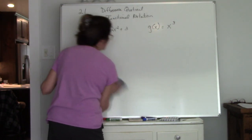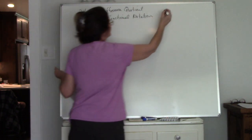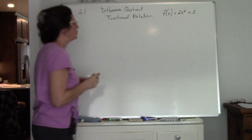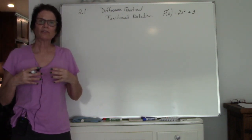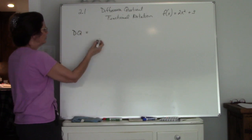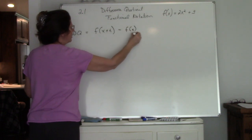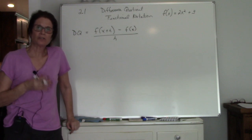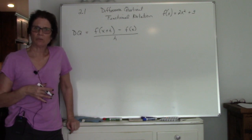Now we're going to jump to the difference quotient, going back to our function f(x) = 2x squared plus 3. The difference quotient is written as: f(x+h) minus f(x), all over h. Where this comes from is really just the slope formula — y2 minus y1 over x2 minus x1. It's just a slope formula.